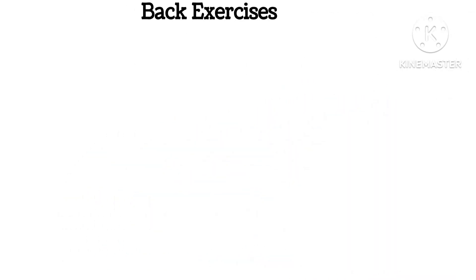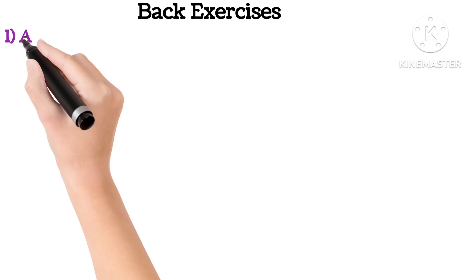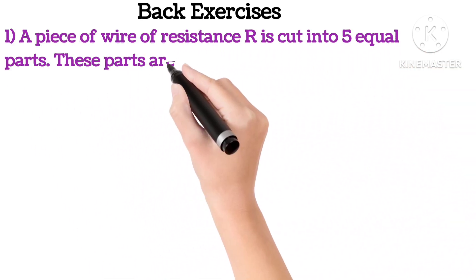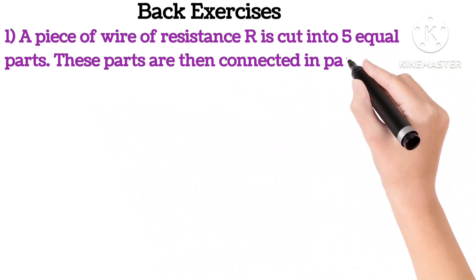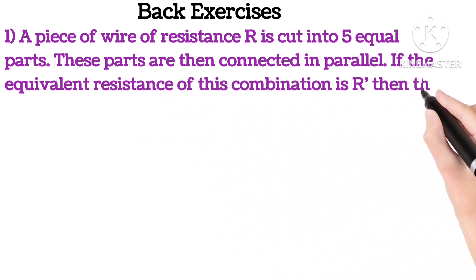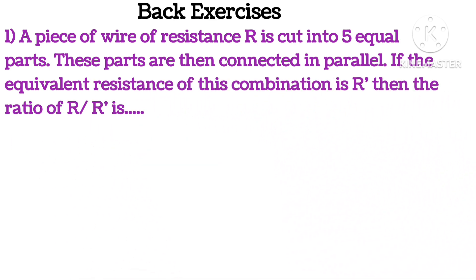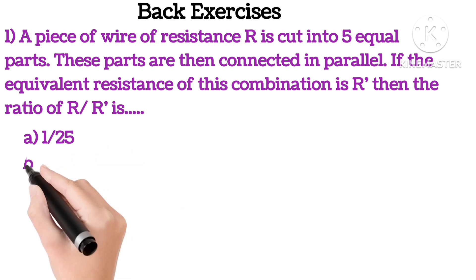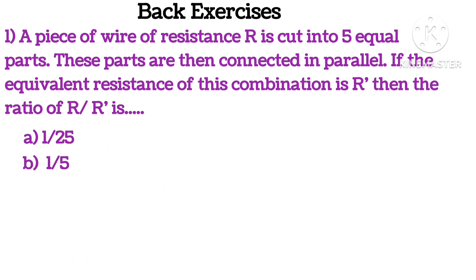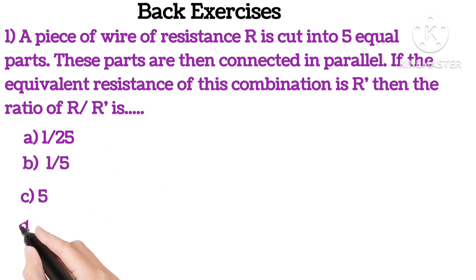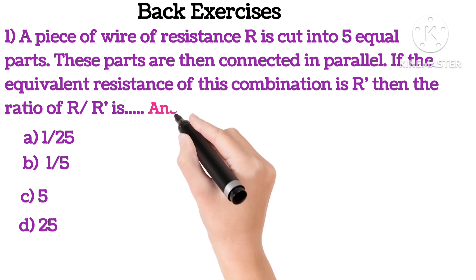Back Exercises Question No. 1: A piece of wire of resistance R is cut into 5 equal parts. These parts are then connected in parallel. If the equivalent resistance of this combination is R', then the ratio of R upon R' is 1 by 25, 1 by 5, 5 or 25.